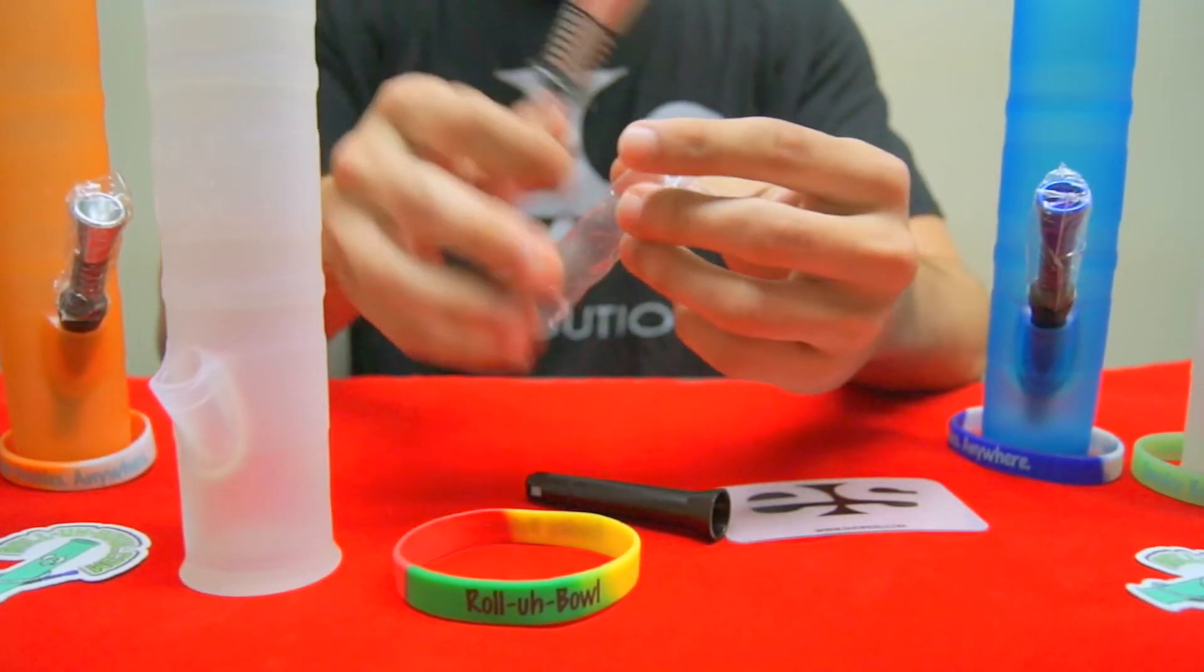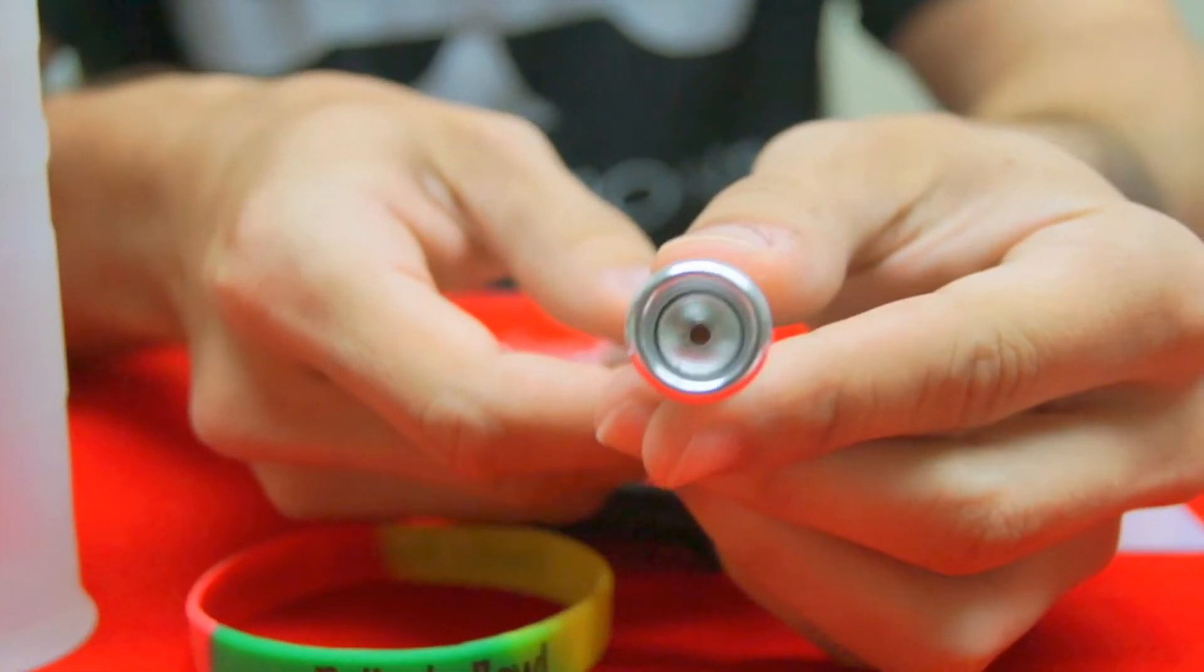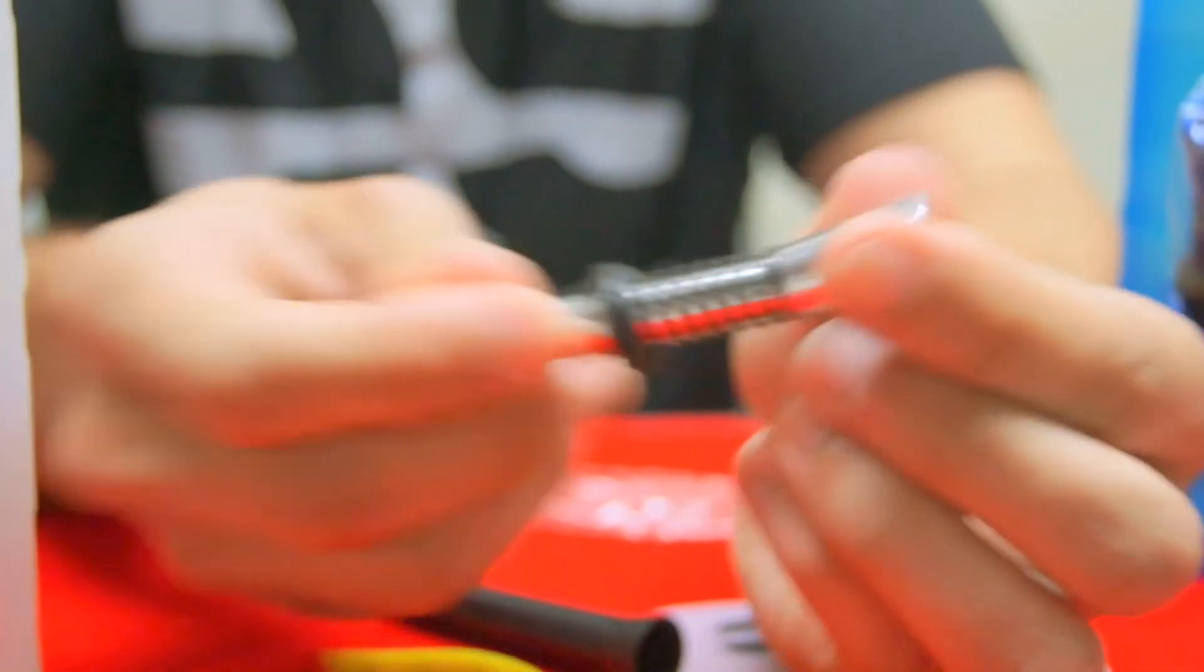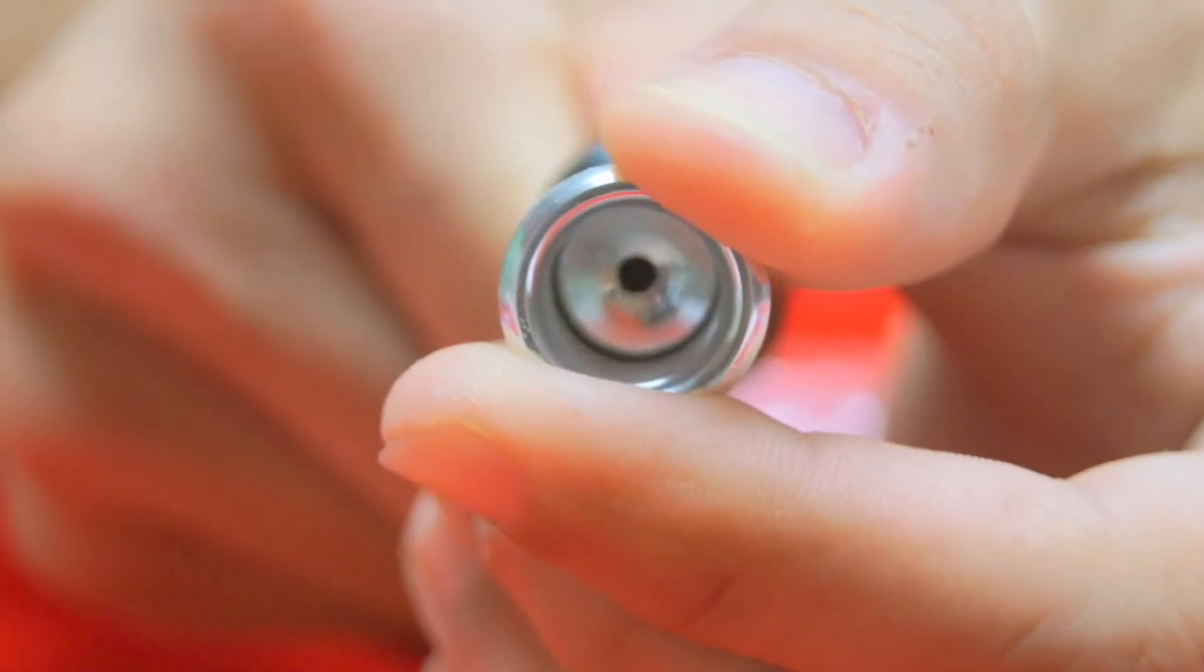And lastly is the 9mm anodized alloy ejectable which has a spring mechanism allowing you to easily and effectively clean out any ash or residue from the bowl after every use.